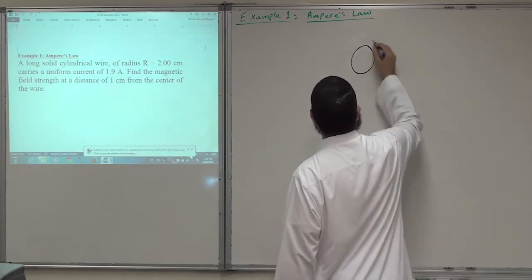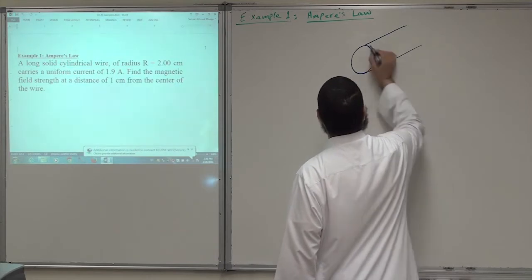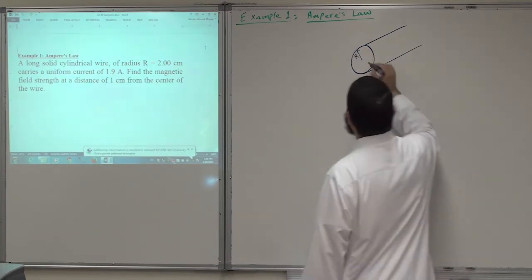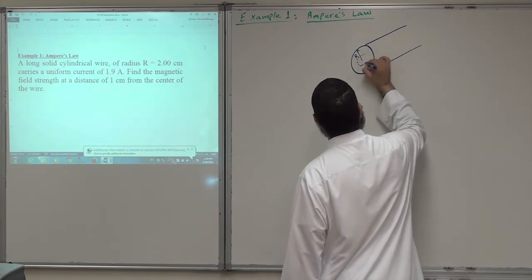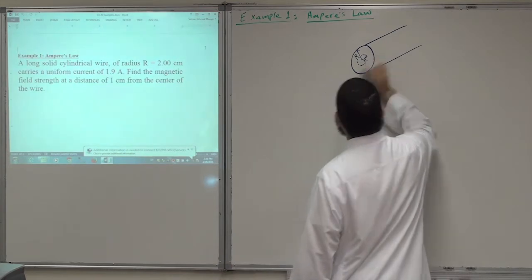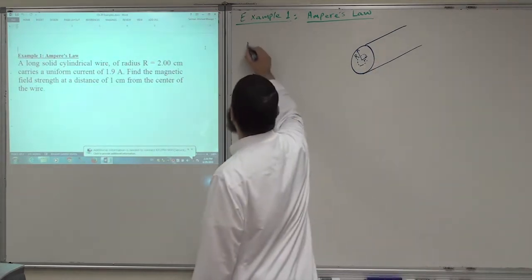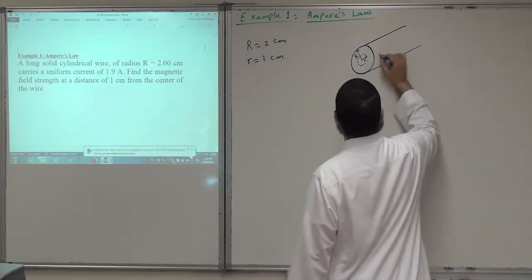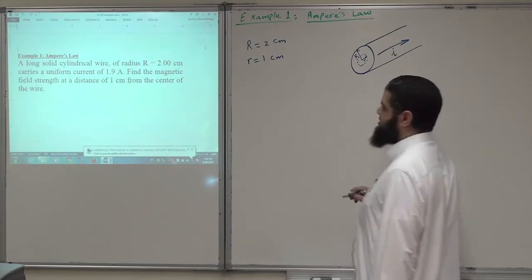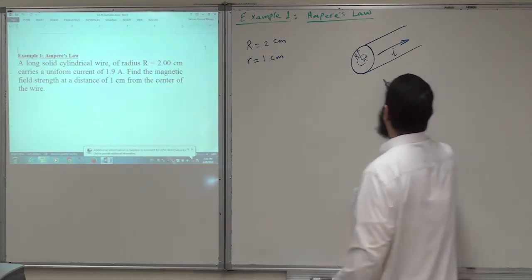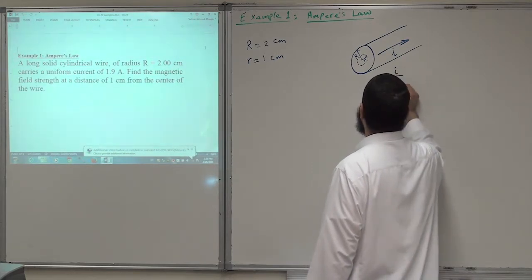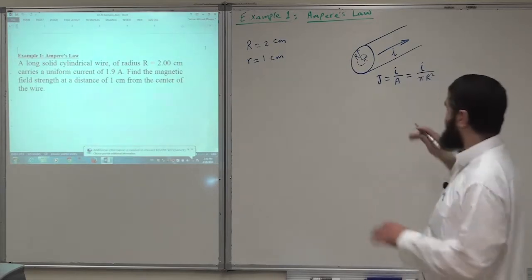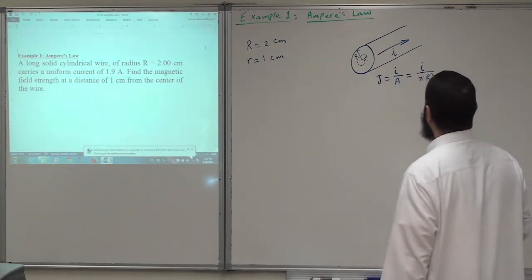Let me draw the problem. This is the wire, and it has a radius I'll call capital R. We want to know the magnetic field at a smaller distance, which I call small r. Capital R is 2 cm while small r is 1 cm. Let us assume the current is moving this way — it is a uniform current. So we can think of J, the current density, which is I over the cross-sectional area, I divided by π R².